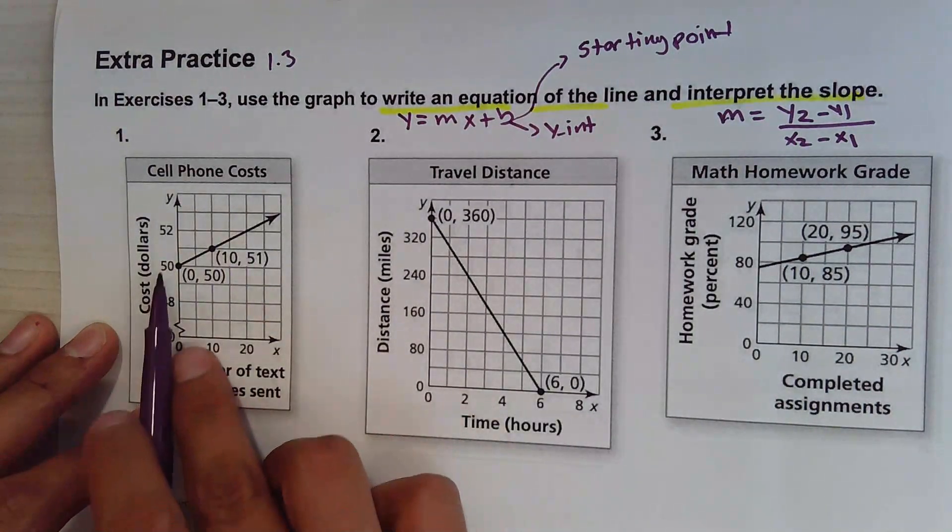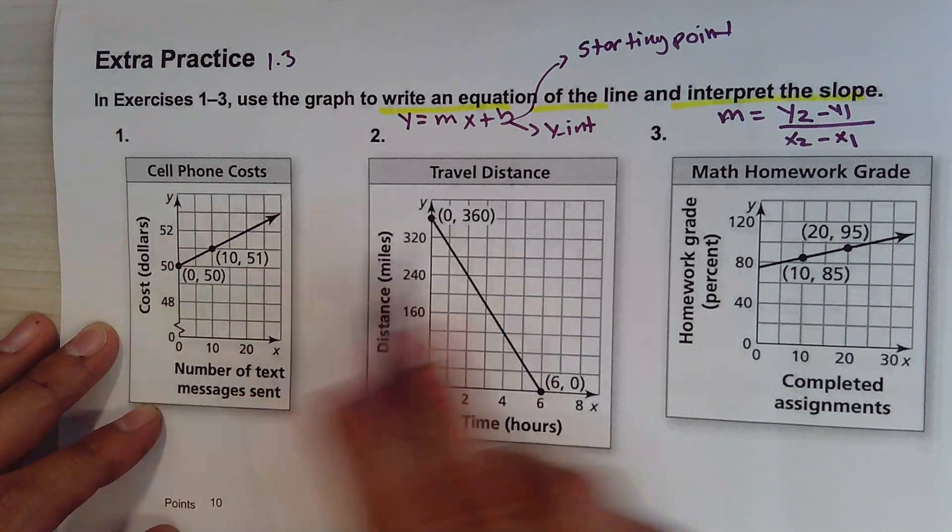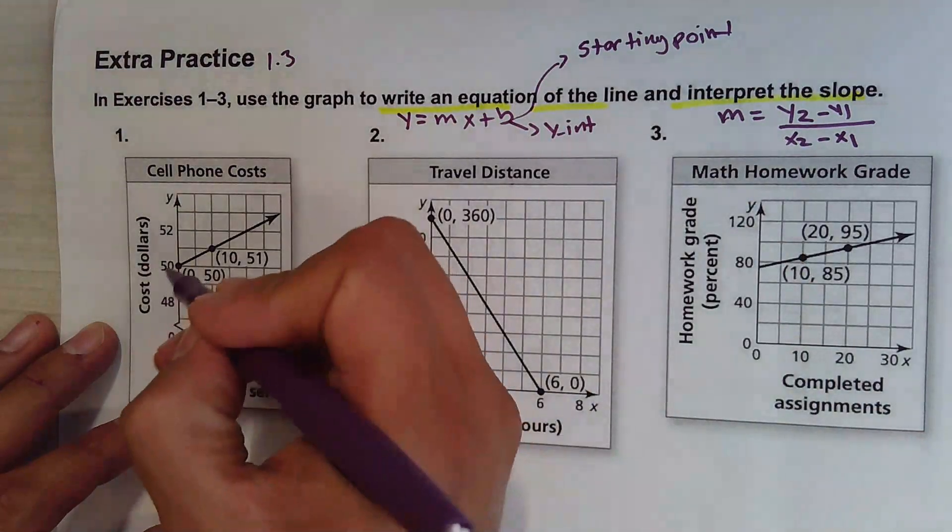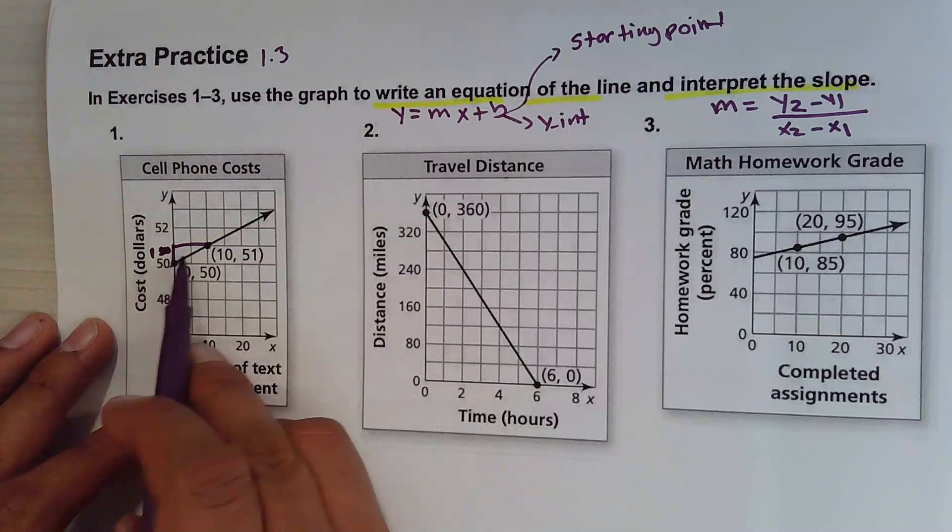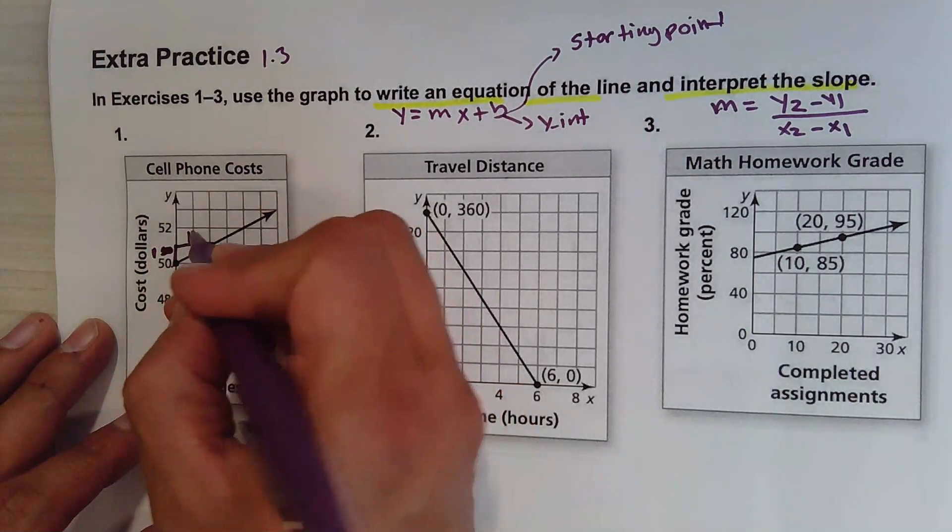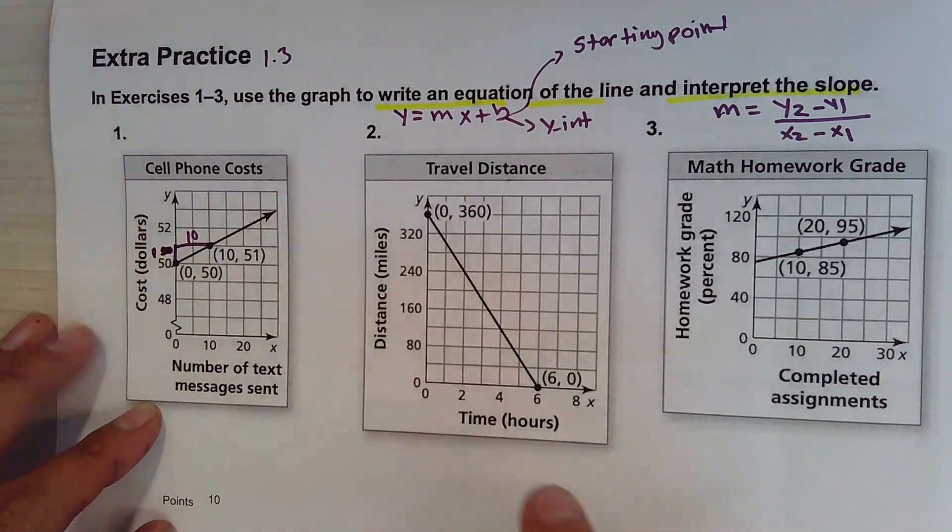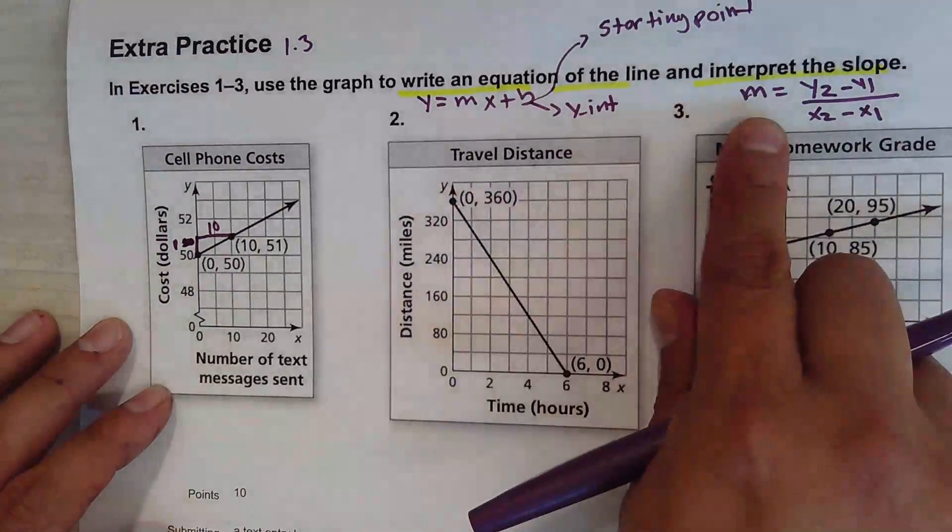You can do rise over run here, but we're just going to use the formula. So to find the formula, it is rise over run, so it's 1 over 10. But to make sure that we don't have any confusion, we're going to do it using the formula.